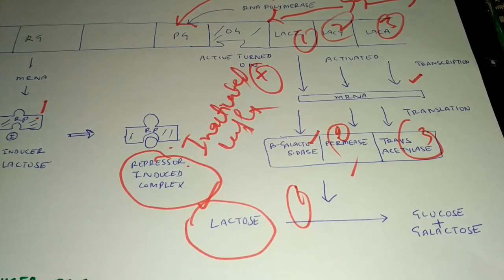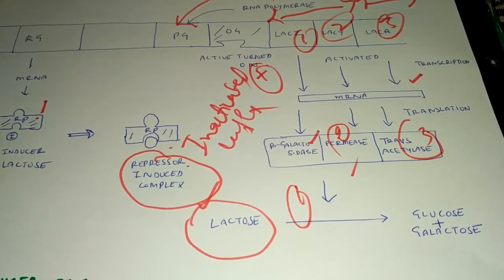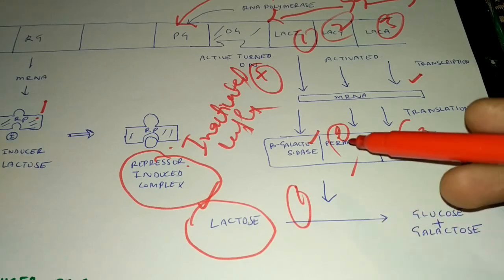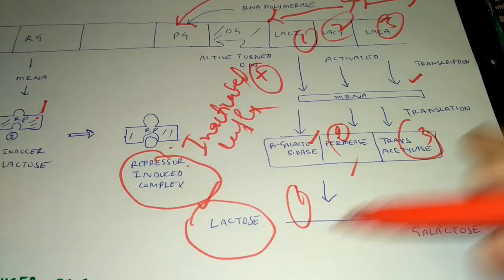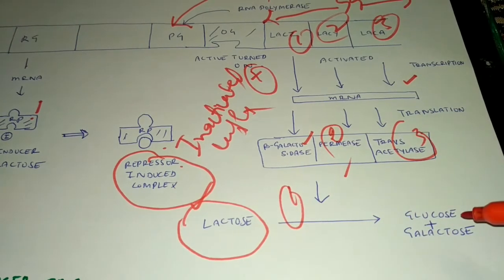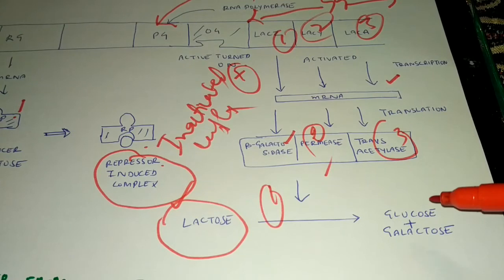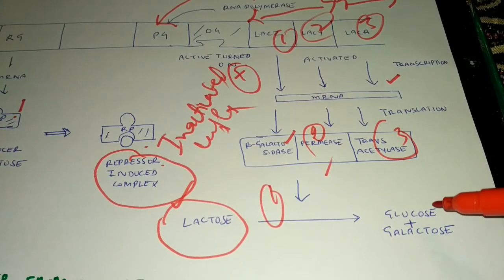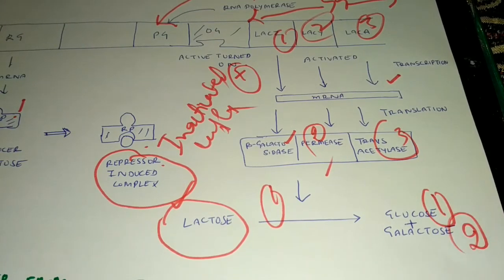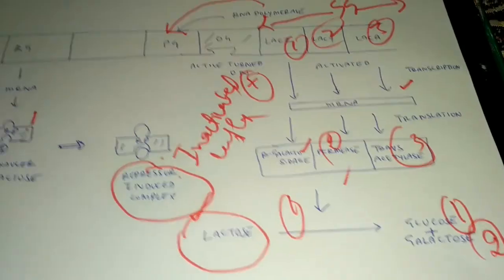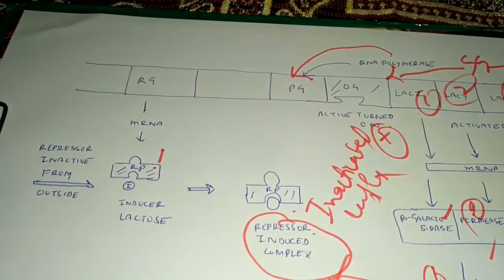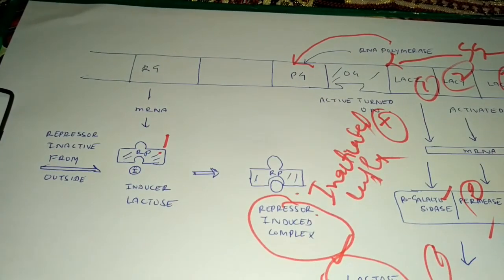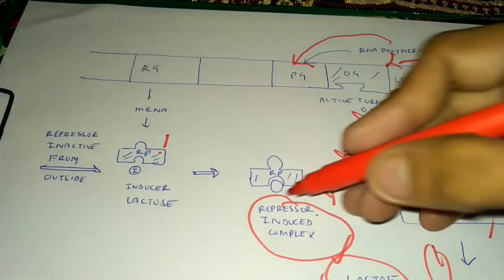As discussed earlier, these three enzymes will act on the lactose and break it down into its two monomers — glucose and galactose. And this is the lac operon.